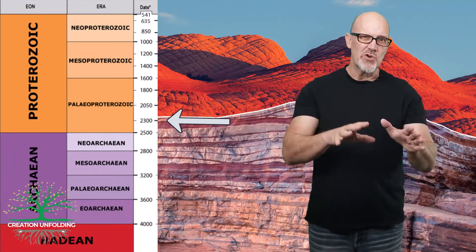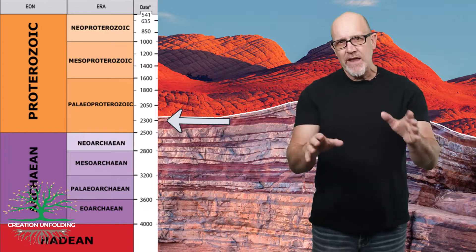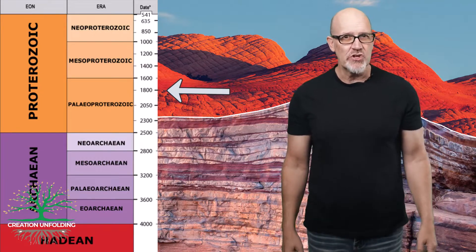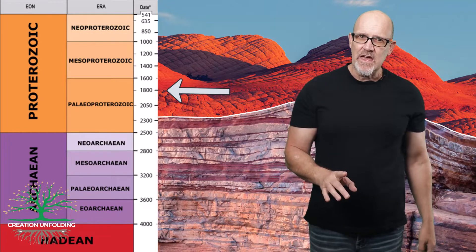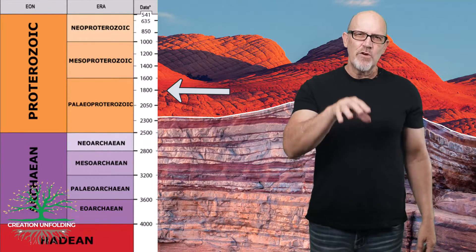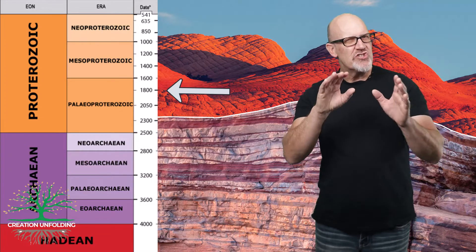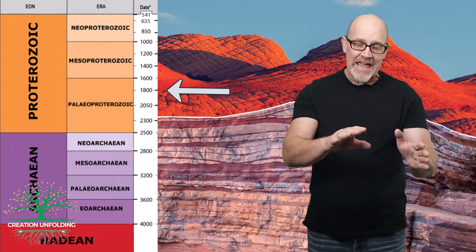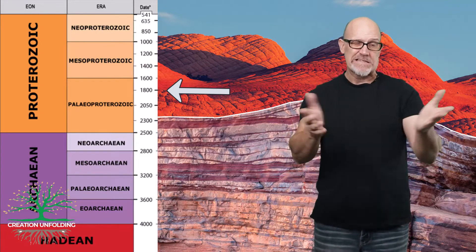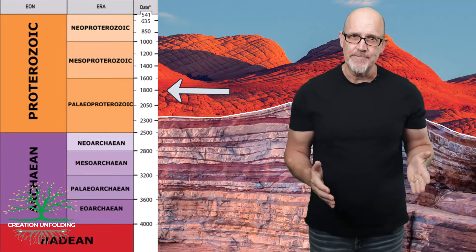Things don't line up perfectly. Banded iron formations persist until about 1.8 billion years ago, but the thinking is that oxygen was rising at such a rate from 2.3 to 1.8 billion years ago that you could still have the red beds and banded iron formations at the same time — at least for a little while, well, 600 million years or so — until the planet was thoroughly oxygenated.